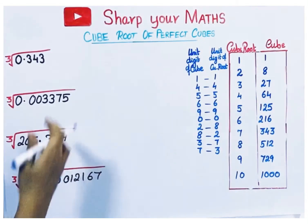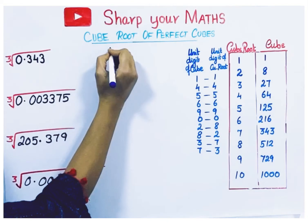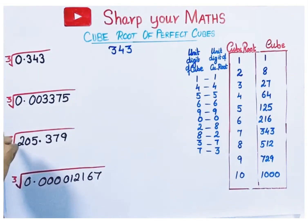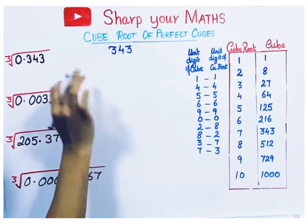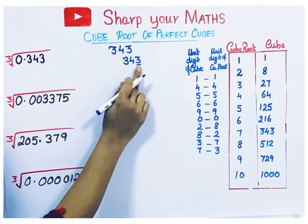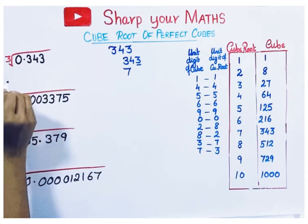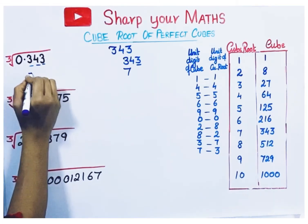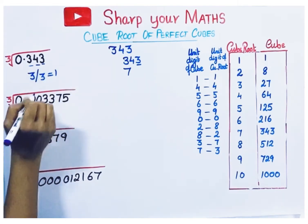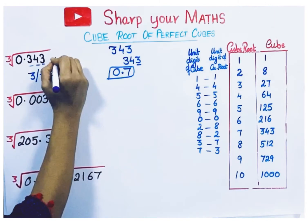Next is the cube root of decimals. To find the cube root of a decimal perfect cube, first take the number without the decimal point. Then divide into groups as before — last 3 digits one group, remaining another. Check the unit digit: if the cube ends with 3, its cube root ends with 7. To insert the decimal point, check how many decimal places the original cube has — it has 3. Divide 3 by 3 to get 1, meaning the cube root should have 1 decimal place. So the cube root is 0.7.